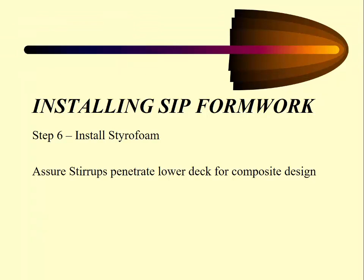The next step is to install the styrofoam. Styrofoam is there because we don't want the added dead load of concrete in the corrugations — those corrugations are what give us the strength. We use styrofoam as a lightweight alternative that doesn't react with the concrete. Also make sure your stirrups penetrate into the lower deck for composite design — stirrups on pre-stress beams, or Nelson studs on steel beams. Nothing should be welded to structural steel beams in the field; anything welded should be done in the shop unless specifically shown on the plans.